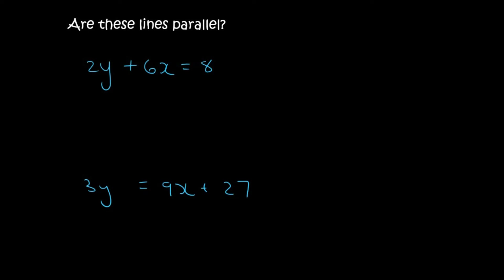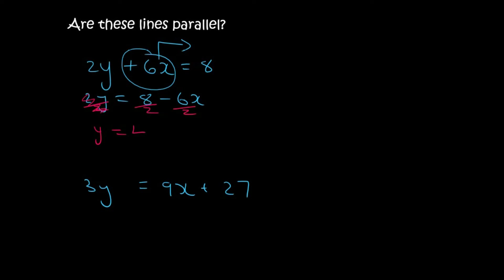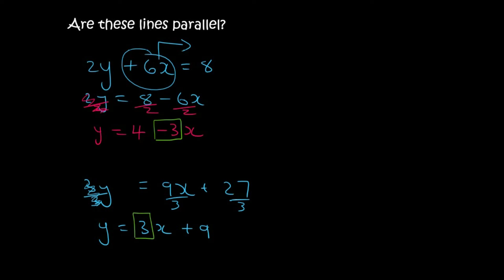Here's the next two lines. Let's see if they are parallel. Step one: get them into standard form. I'm going to move the positive 6x over, giving us 2y equals 8 minus 6x, then divide everything by 2, ending up with y equals 4 minus 3x. For the bottom equation we divide everything by 3, giving us y equals 3 plus 9x. Now compare: the number in front of x at the top is minus 3, and at the bottom it is positive 3. They are not the same, so these lines are not parallel.